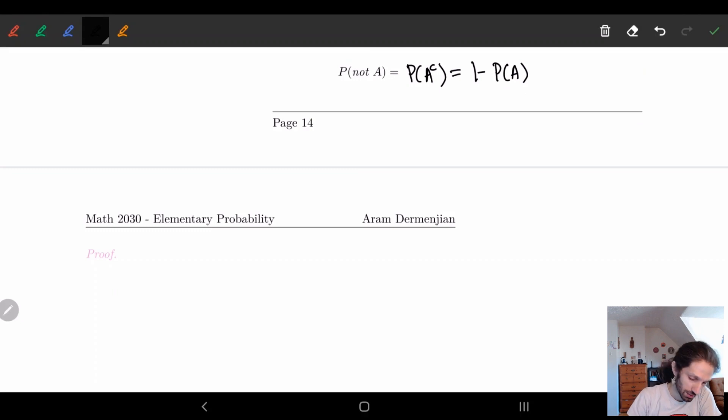So first we're going to say, recall that omega is equal to a disjoint union. So here we're saying that they're disjoint A union A^c. So this is a partition. So remember, if we have a partition, we can use the addition rule. So by the addition rule, by addition, the probability of omega is equal to the probability of A plus the probability of A complement.